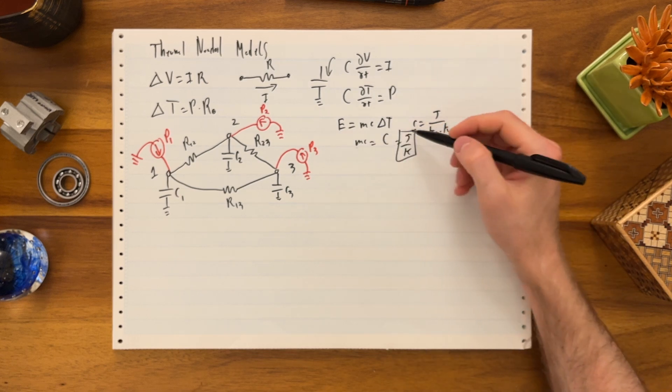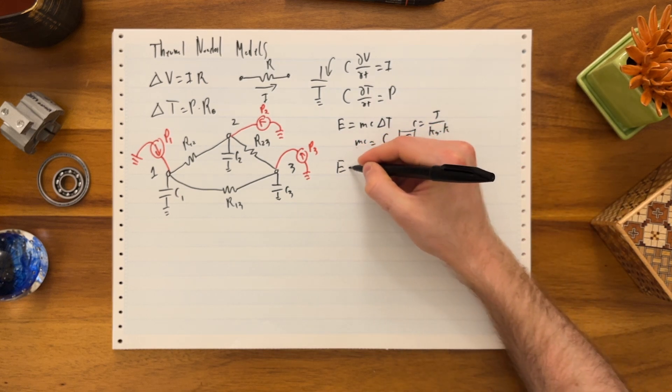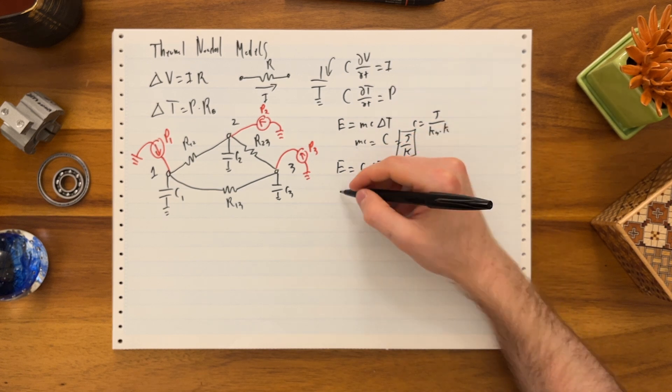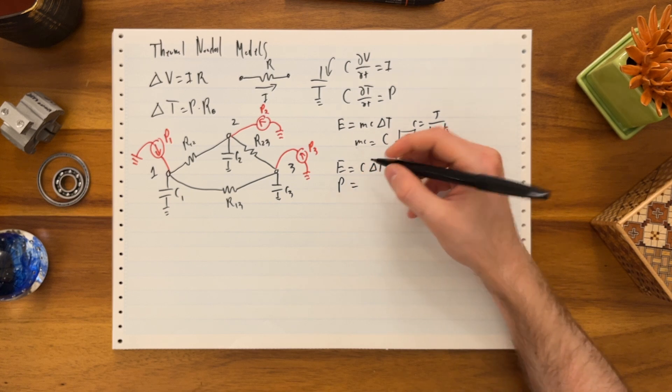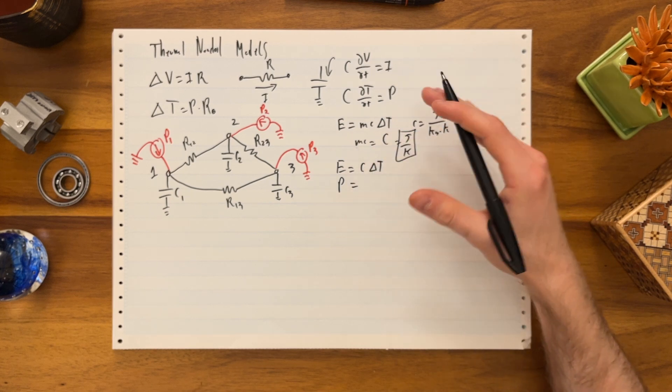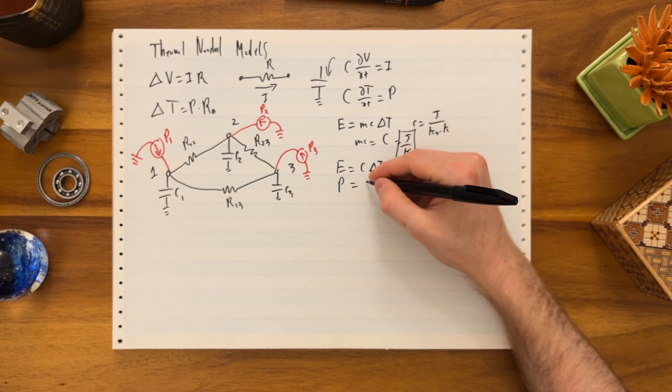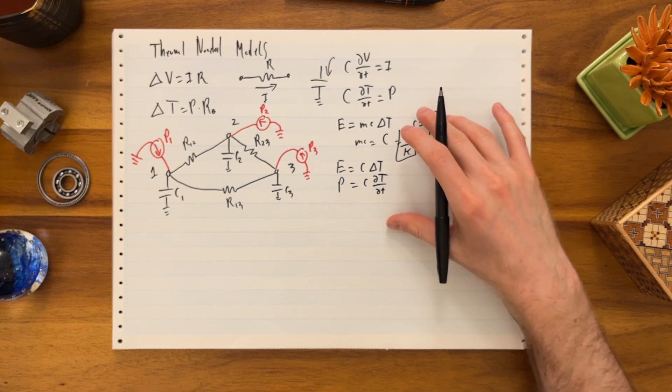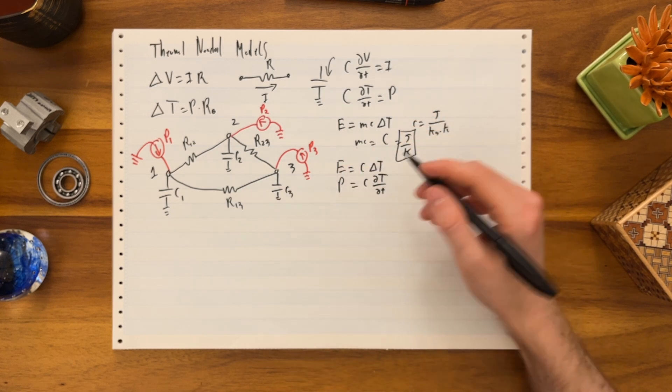Let's take the derivative of this. So instead of having E equals C delta T, derivative of energy with time is power. Assuming the C doesn't change, which truthfully it can, but we'll say C delta temperature delta time. So let's use this. That's conservation of energy on one node. Let's write it out in more detail.